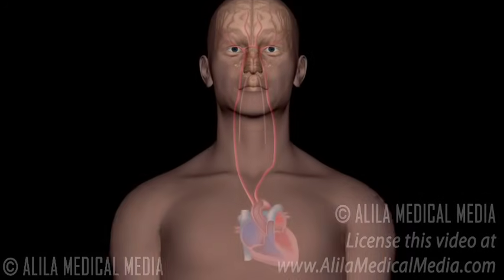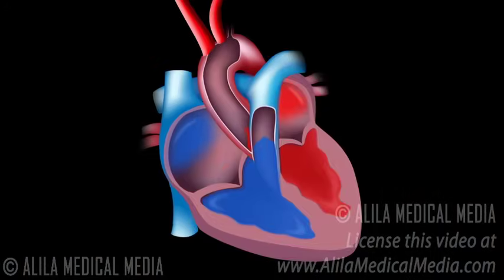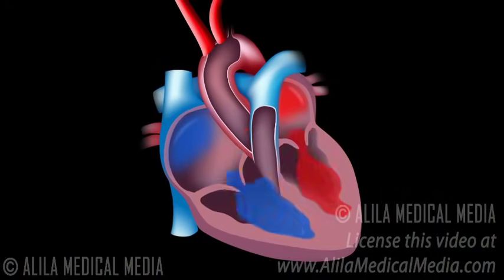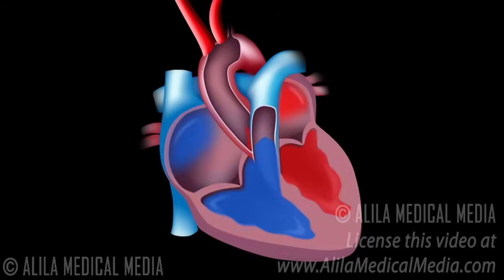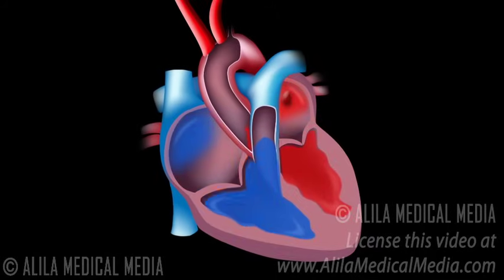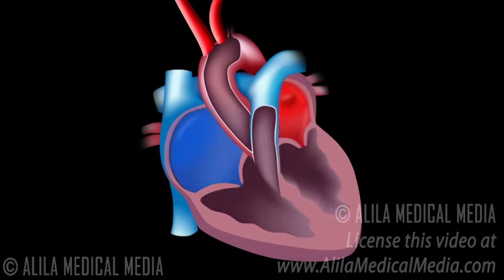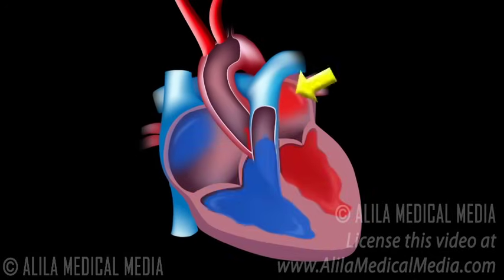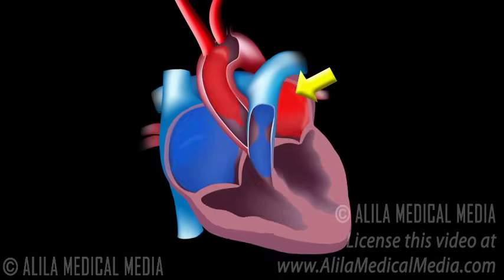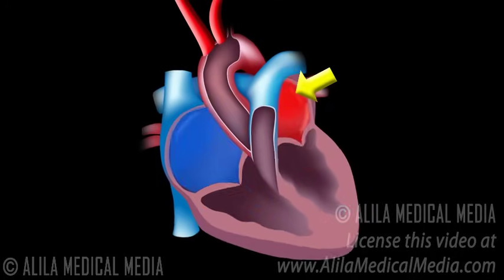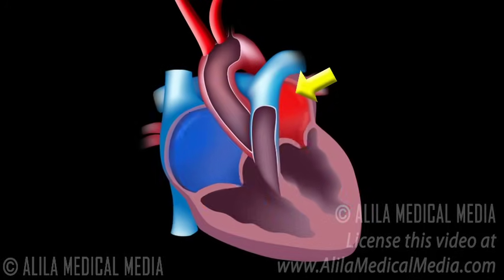As the atria do not function properly, the heart puts out less blood and heart failure may occur. The most common complication of atrial fibrillation, however, is the formation of blood clots in the atria. As the atria do not empty completely into the ventricles, the blood may stagnate inside the atria and blood clots may form.